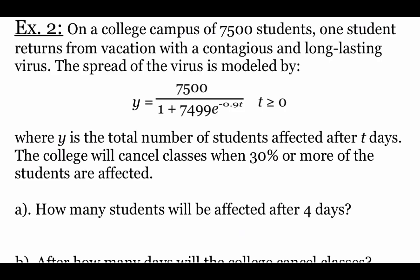Next example, we're looking at modeling a virus growth on a college campus of 7,500 students. So we've got this equation, y equals 7,500 divided by 1 plus 7,499 times e to the negative 0.9 t, where we're using t values that are greater than or equal to zero, because t is going to represent the number of days. We're also told that the college is going to cancel classes if 30% or more of the students are affected. So the first thing we want to figure out is how many students are actually going to be affected after four days.